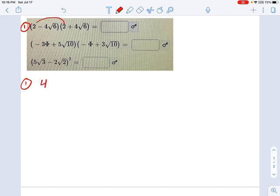First, you do 2 times 2 to make 4. Then you do 2 times 4 radical 6 to make 8 radical 6. Then negative 4 radical 6 times 2, that's negative 8 radical 6. And you do negative 4 radical 6 times 4 radical 6, which is, careful now, negative, the 4s multiply, so that's negative 16 times radical 36.